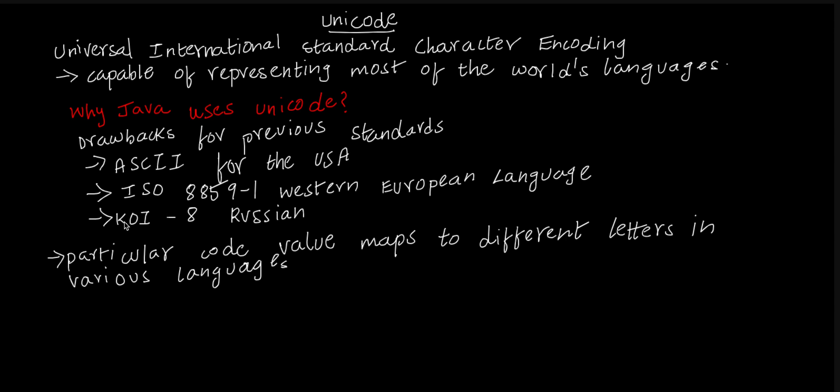The same code could have multiple characters - in ASCII it could be an English alphabet, in ISO 8859-1 it could be a European language character, and in KOI-8 it could be a Russian character. A particular code value maps to different letters in various languages. To overcome this problem, they invented Unicode.